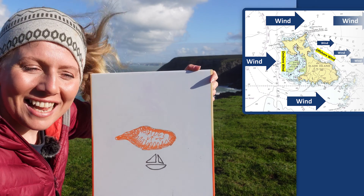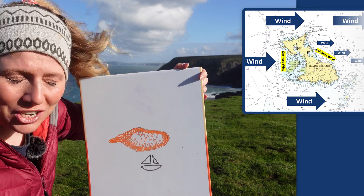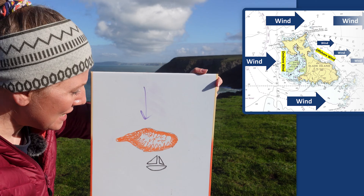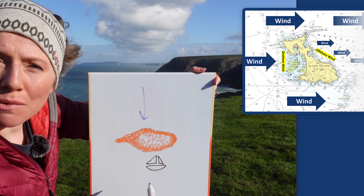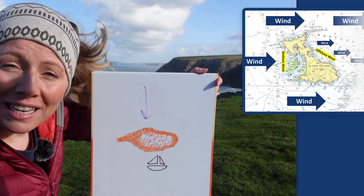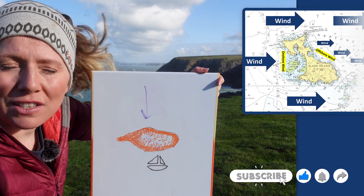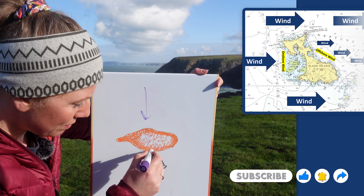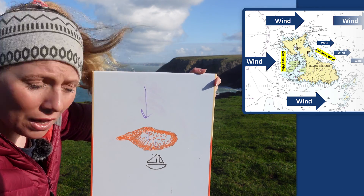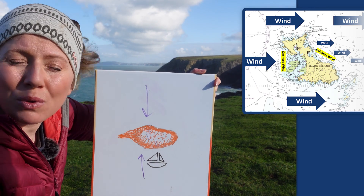The most obvious effect that land will have on how we experience the weather is shelter. Land is great at creating a physical barrier for the wind, and even if it doesn't block it completely it can slow it down with friction. Meaning that if we're in the lee of the land we're going to experience the benefits of the shelter — we would call this an offshore wind. If it was an onshore wind, this obviously wouldn't give us any benefit whatsoever.